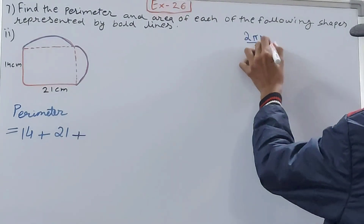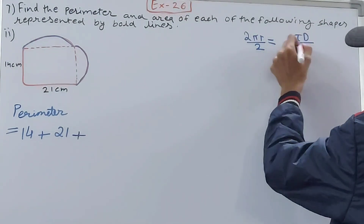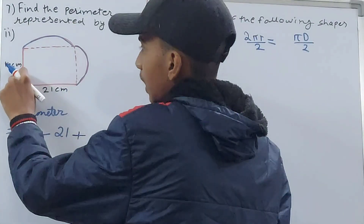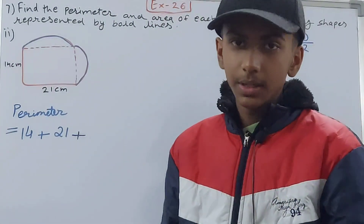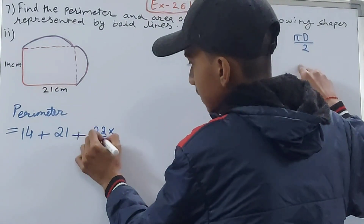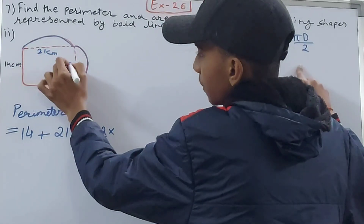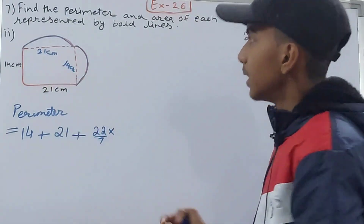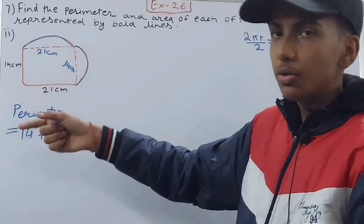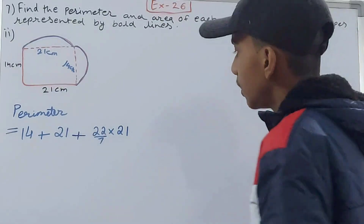The circumference of a semicircle can be calculated as πd/2. Since we have diameters here, I will use πd/2. If this side is 21 cm then the diameter of one semicircle is 21 cm, and the other is 14 cm. So for the first semicircle: (22/7) × 21 × (1/2).